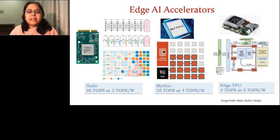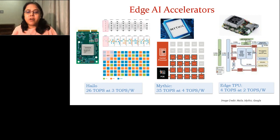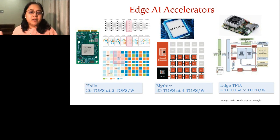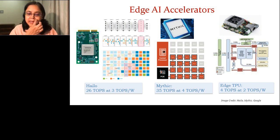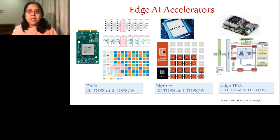The other extreme is edge AI accelerators, such as the Google Edge TPU — Tensor Processing Unit for AI acceleration. Others include Hilo or Mythic. For example, Mythic can achieve about 35 tera operations per second at 4 tera ops per watt, achieving very high energy efficiency. However, they are not able to process all kinds of compute kernels — only AI kernels. They can only accelerate machine learning code but nothing else.